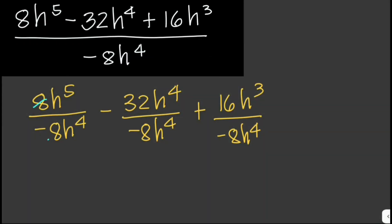For the first term, 8 divided by negative 8 is negative 1. Then h⁵ divided by h⁴ — subtract the exponents: 5 minus 4 — so we are left with only h. Our answer for this term is just negative h.